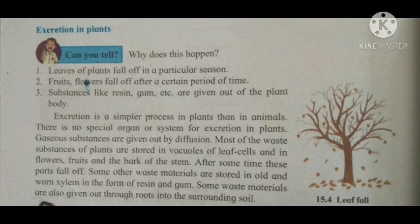There are no special organs or system for excretion in plants. The fall of leaves, fruits, flowers, bark, resin, and other waste material happens after some time — those parts fall off.